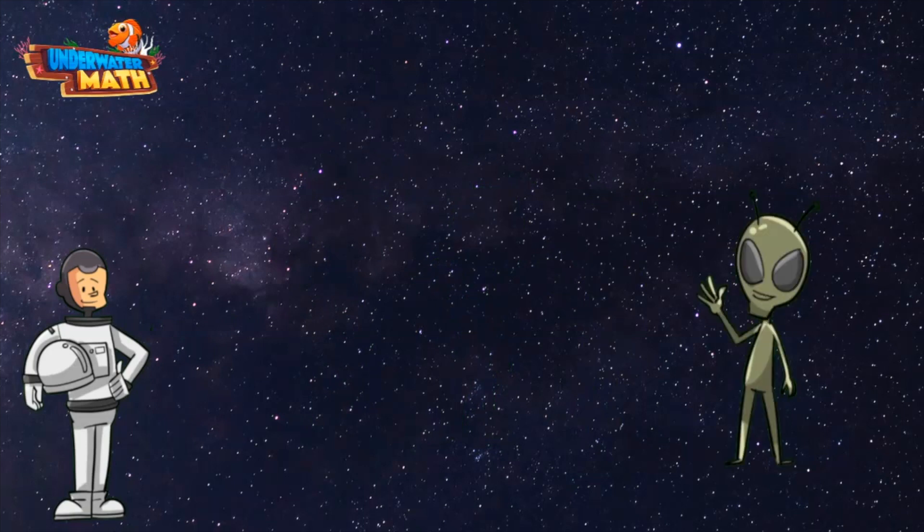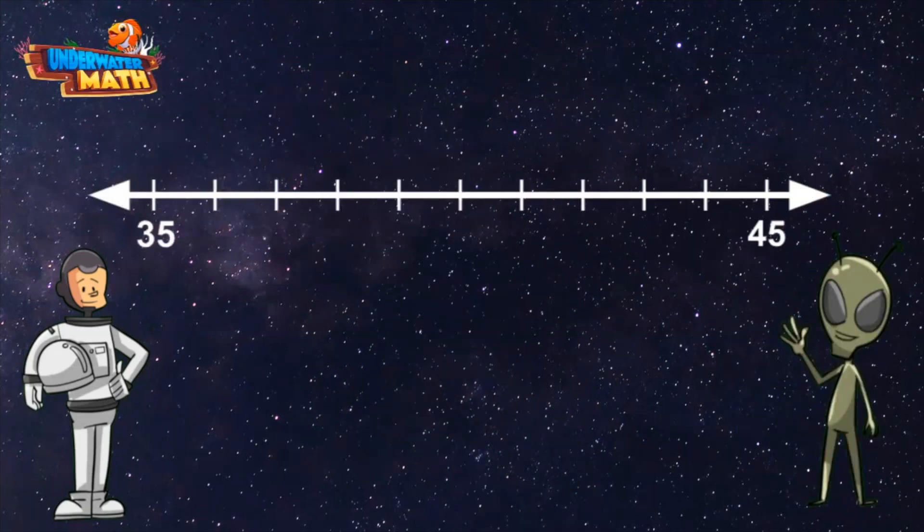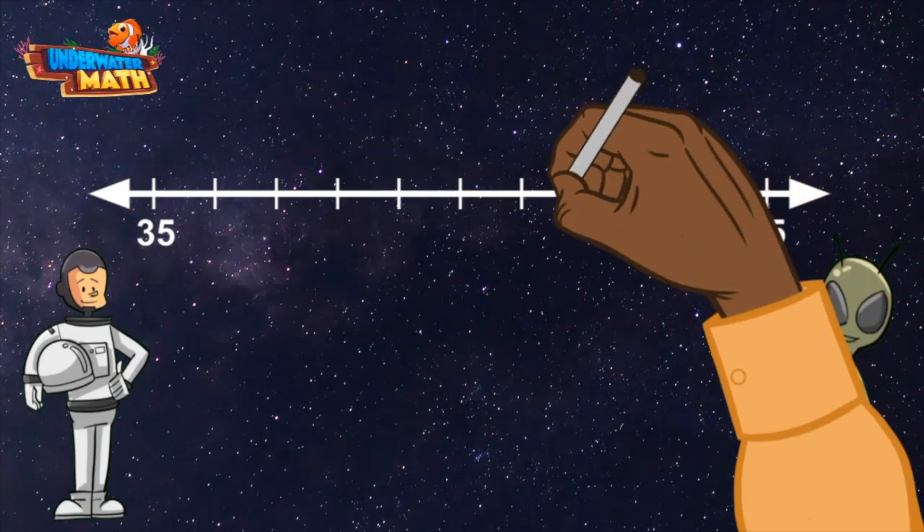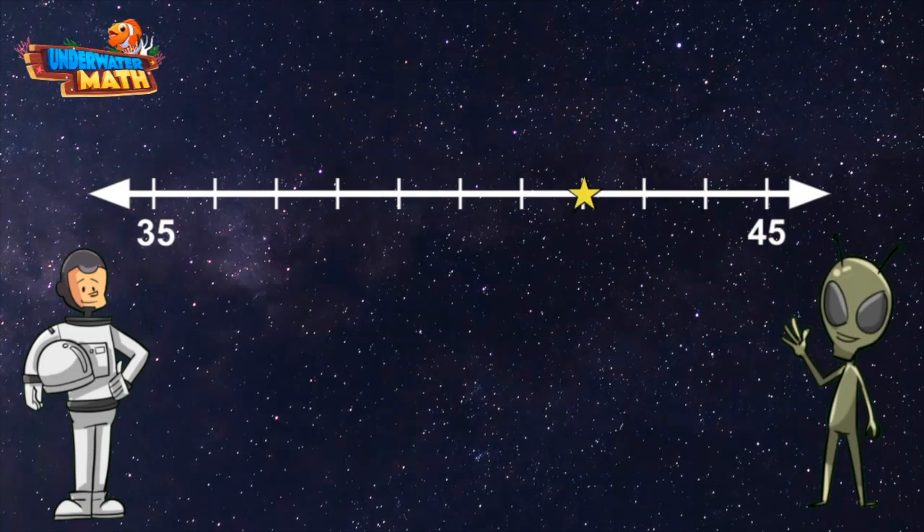That starts at 35 and ends at 45. Perfect, thank you. Now I'm going to put a star right here. We need to determine what number the star represents. We know the number line starts at 35. Each tick mark...